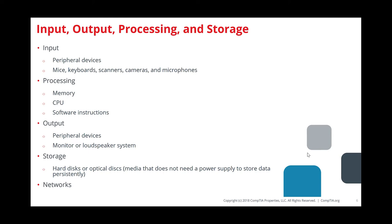Let's break it down further. The first thing is input — from peripheral devices like your keyboard, mouse, touchscreen, or a microphone. From there, the CPU and memory get those instructions, the CPU processes them, and then output shows up on a peripheral device such as a monitor or as audio. So: input, process, output.